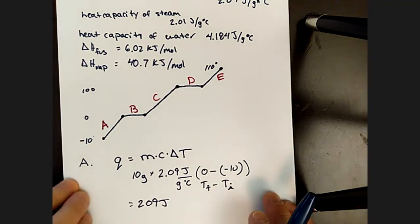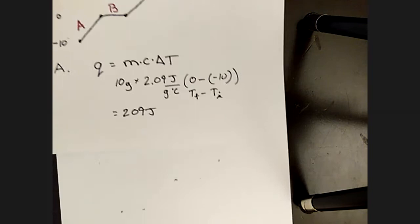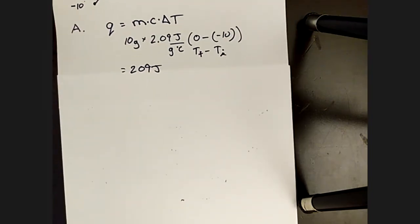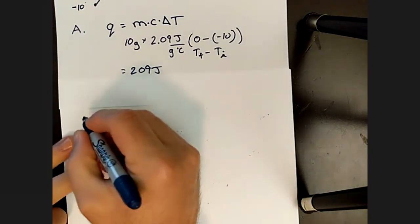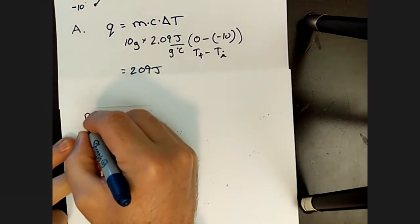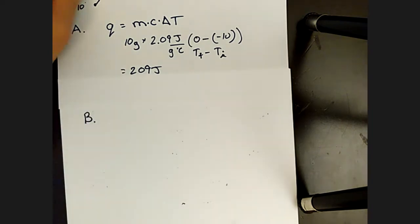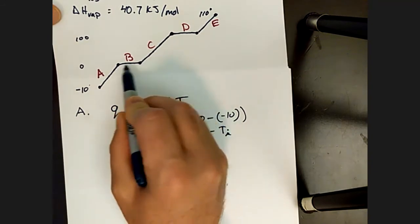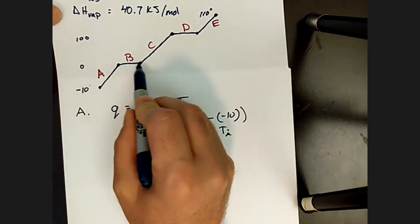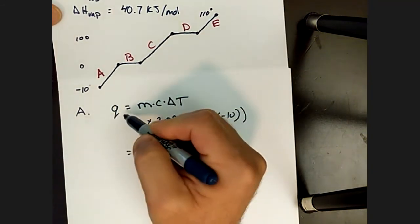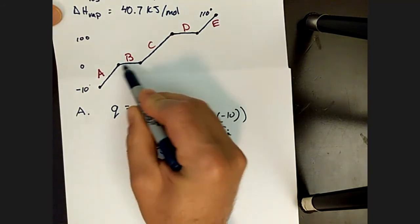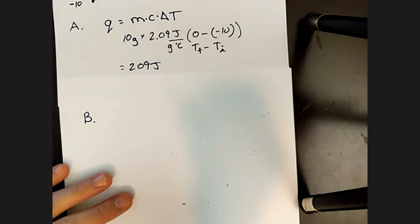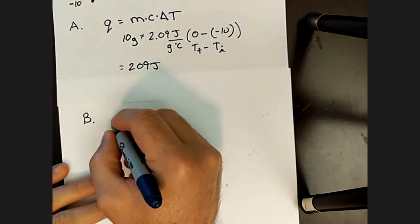That is segment A where we have achieved 209 joules is required to raise the temperature of ice the 10 degrees. Now we're going to lose our page here just a little bit as I move up, but I'll try and leave it at the top. As we go to segment B, segment B is a phase change. There is no heating going on, so it is not our Q equals MCT. The phase change involves the delta H value.